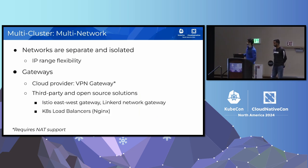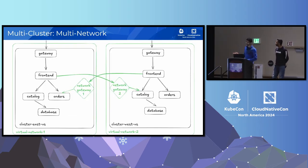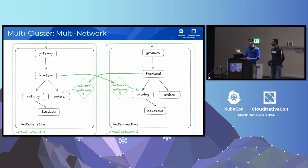The other network topology is multi-network, where networks are separate and isolated. This gives more flexibility in IP address management — unlike a flat network, you don't have to worry about non-overlapping address spaces. Typically this uses a gateway to send traffic across networks, usually over the public internet. This can be a cloud provider gateway or an east-west gateway provided by Istio or Linkerd. East-west traffic is served by this network gateway, and we have a dedicated east-west gateway rather than using the Ingress gateway, so we don't flood it with both north-south and east-west traffic.